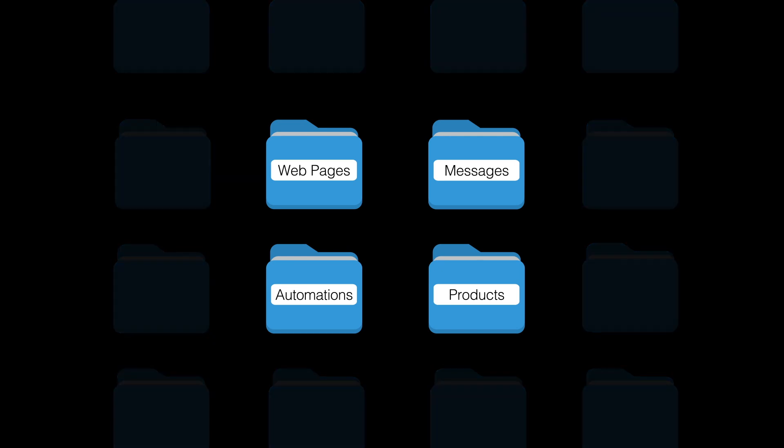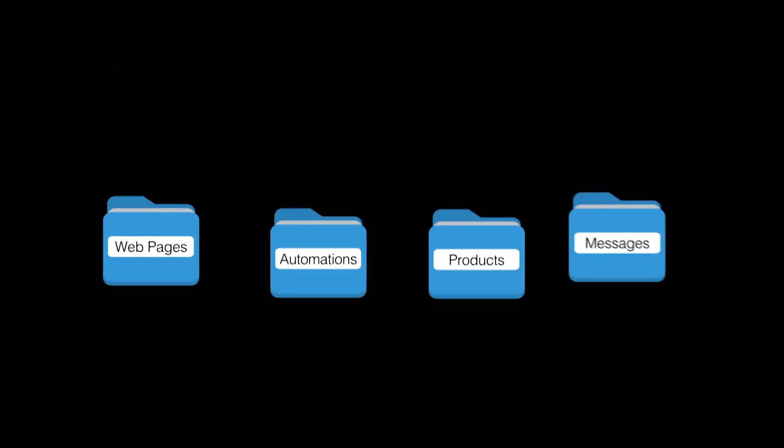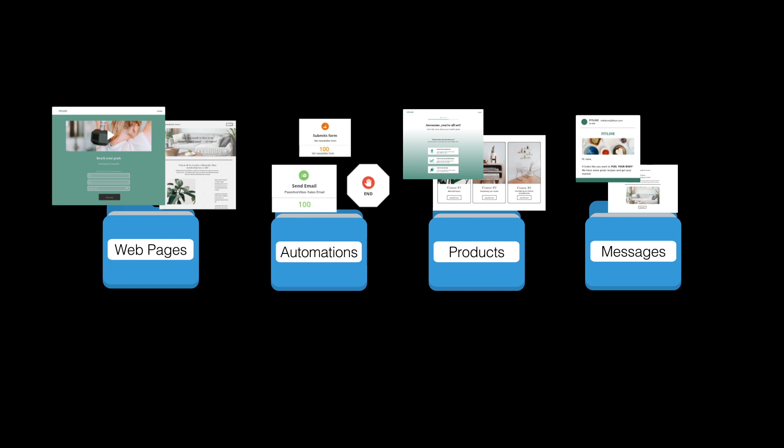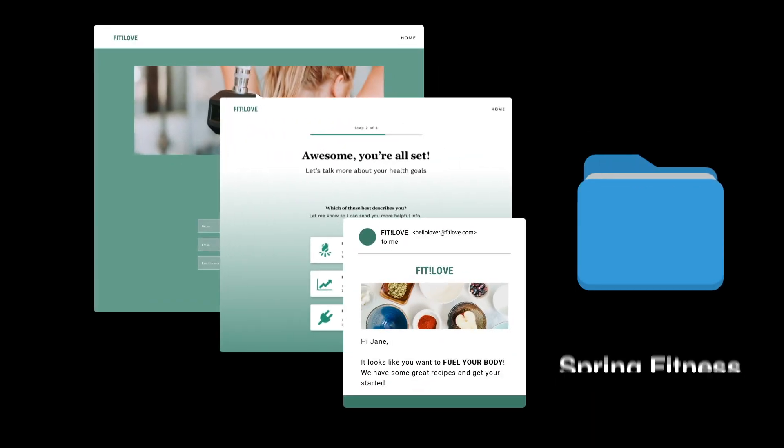Each of those assets is built and stored along with the rest of its own kind — in the messages collection or the pages collection, for example. That means if you wanted to see all the assets related to a particular system, you'd be jumping all around the platform to find each asset type. Ontraport systems solves that problem by storing all related landing pages, emails, automations, forms, and so on in one place based on what project they're for.